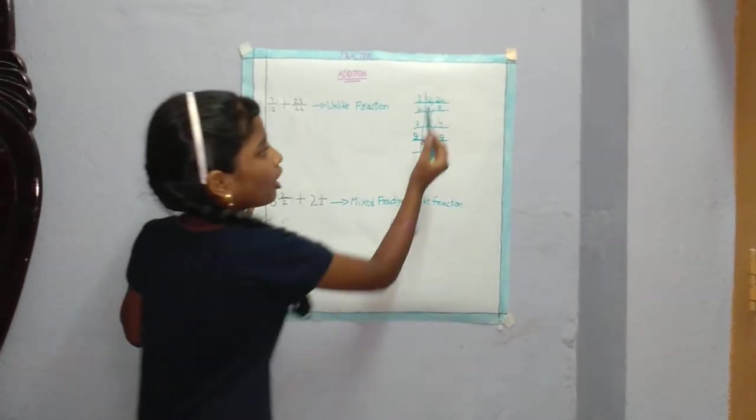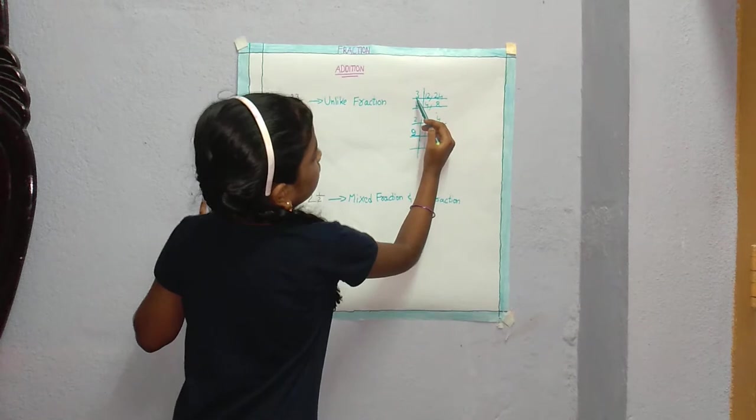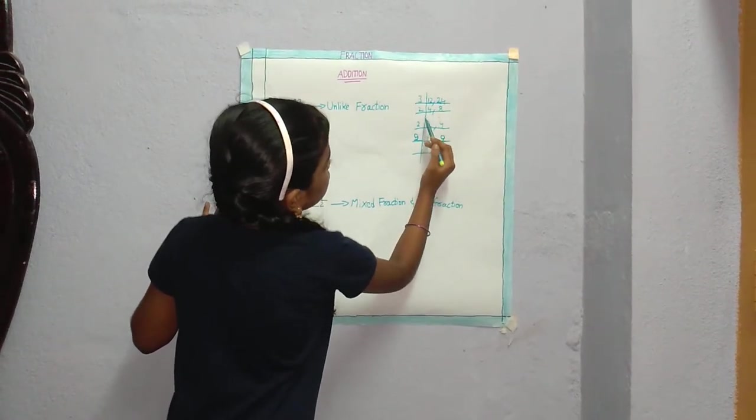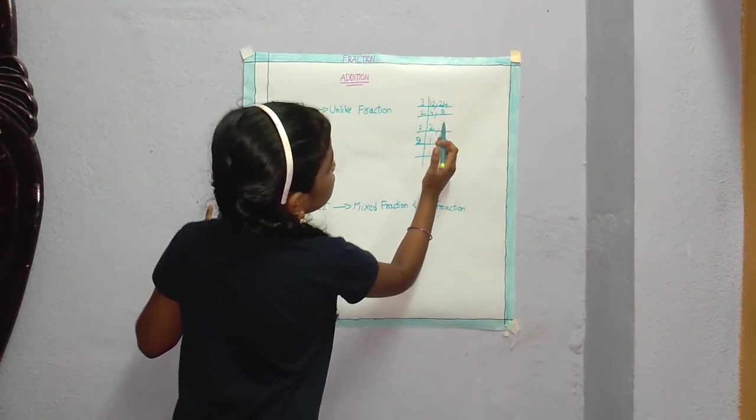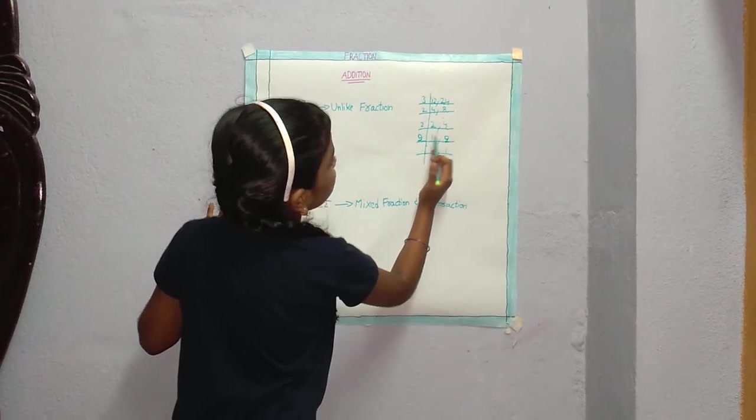So we have to take LCM of 12 and 24. 3 times 4 is 12, 3 times 8 is 24. 2 times 2 is 4, 2 times 4 is 8. 2 times 1 is 2, 2 times 2 is 4. 2 times 1 is 2.